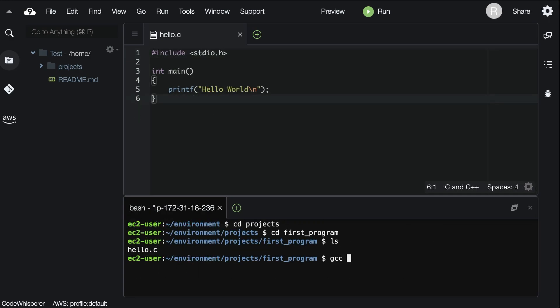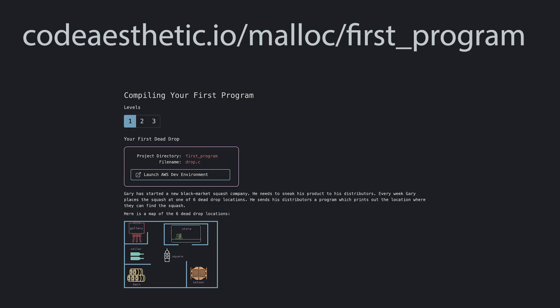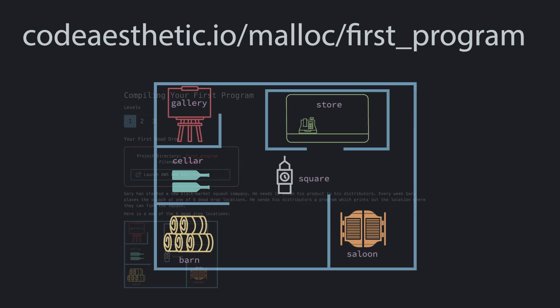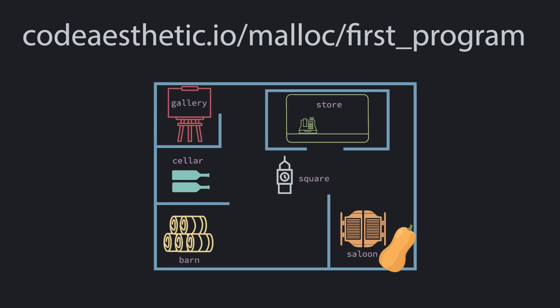Now you've seen how to write your first program. Definitely try running the examples I've shown you and try out some of the experiments. On the site, you'll use some printf statements to help Gary find the right dead drops for his new black market squash operation.